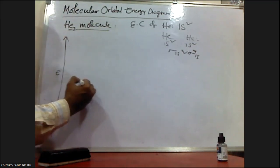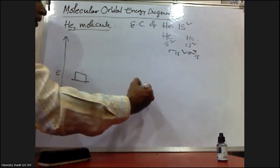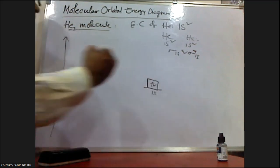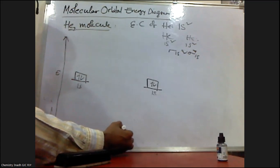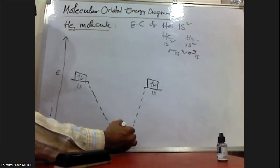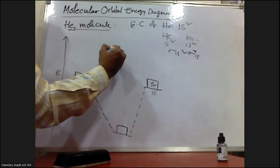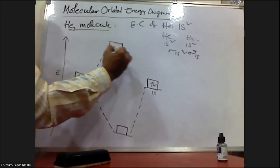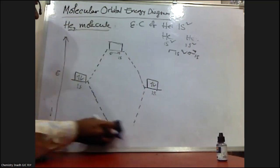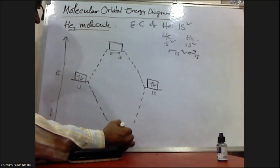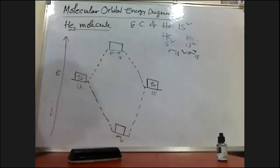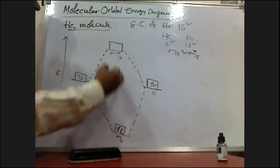There are two electrons in this 1s atomic orbital and two electrons in the other. So in total, we need to fill four electrons into the molecular orbitals. This is the bonding molecular orbital sigma 1s and the anti-bonding sigma* 1s. We need to fill the four electrons: one, two into sigma 1s, then three, four into sigma* 1s.